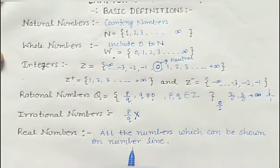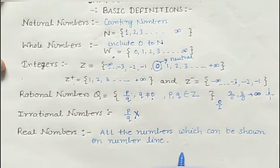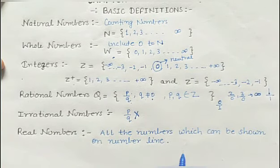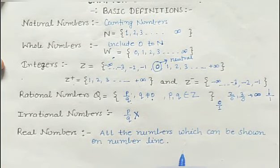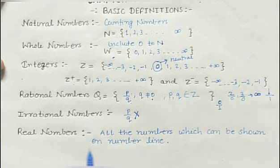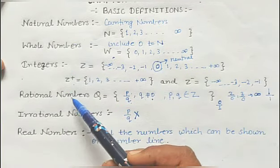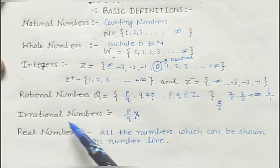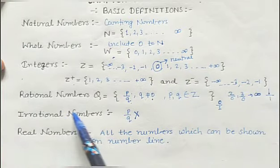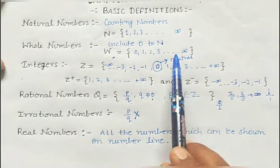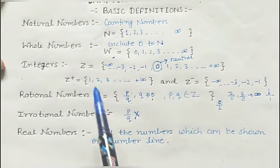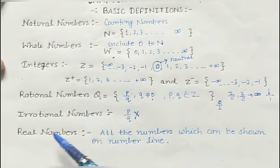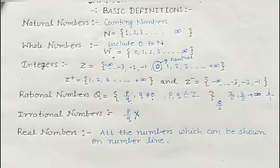Real numbers: all the numbers which can be shown on the number line. The simple definition of real numbers is that all numbers which can be shown on the number line are known as real numbers. You have studied natural numbers, whole numbers, integers, rational, irrational — all these kinds of numbers can be represented on the number line. So the collection of all these is known as real numbers.